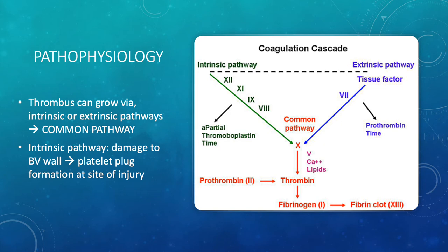For the pathophysiology, a thrombus can grow via the intrinsic or extrinsic pathway, with the most common being the intrinsic pathway — damage to the blood vessel wall causing a platelet plug at the site of injury. The coagulation cascade proceeds through both intrinsic and extrinsic pathways to a common pathway at factor X, then down to prothrombin, which becomes thrombin, which ultimately converts fibrinogen into a fibrin clot.